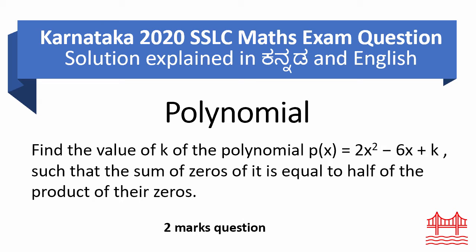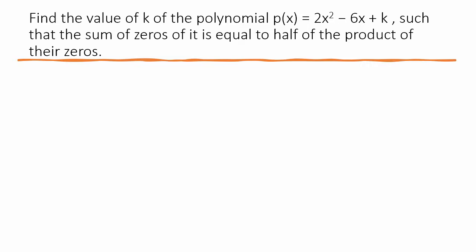Let us first look at the problem. Find the value of k of a polynomial, p(x) = 2x² - 6x + k, such that sum of zeros is half the product of their zeros.